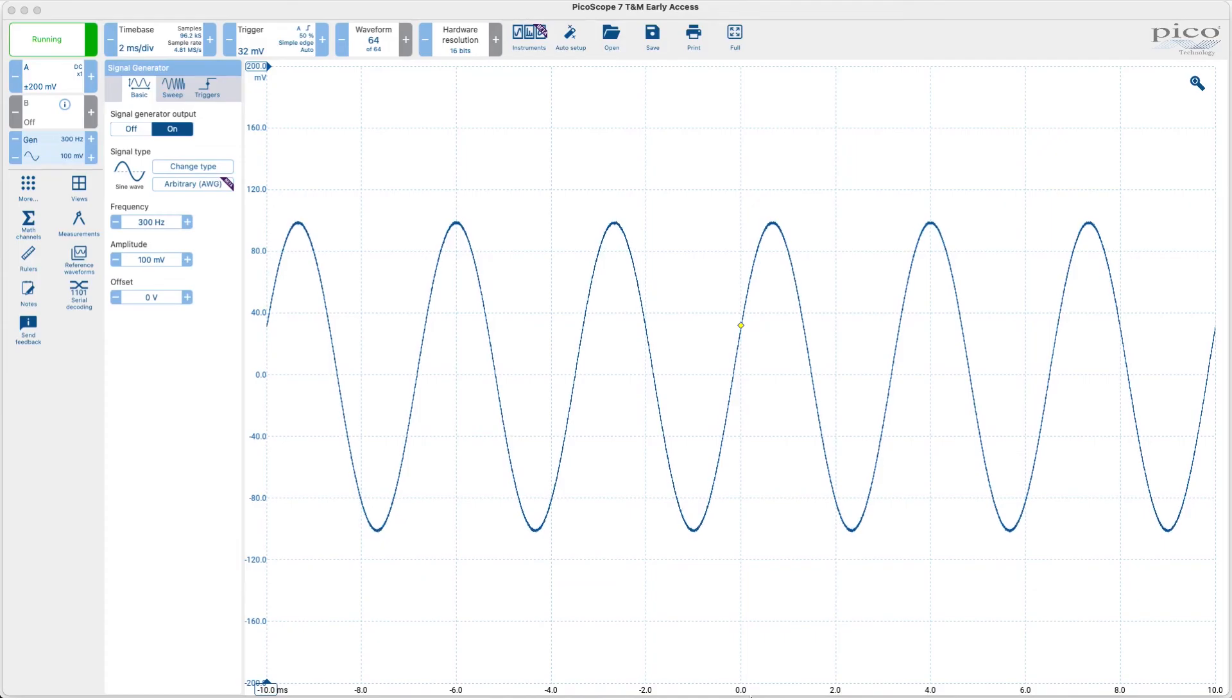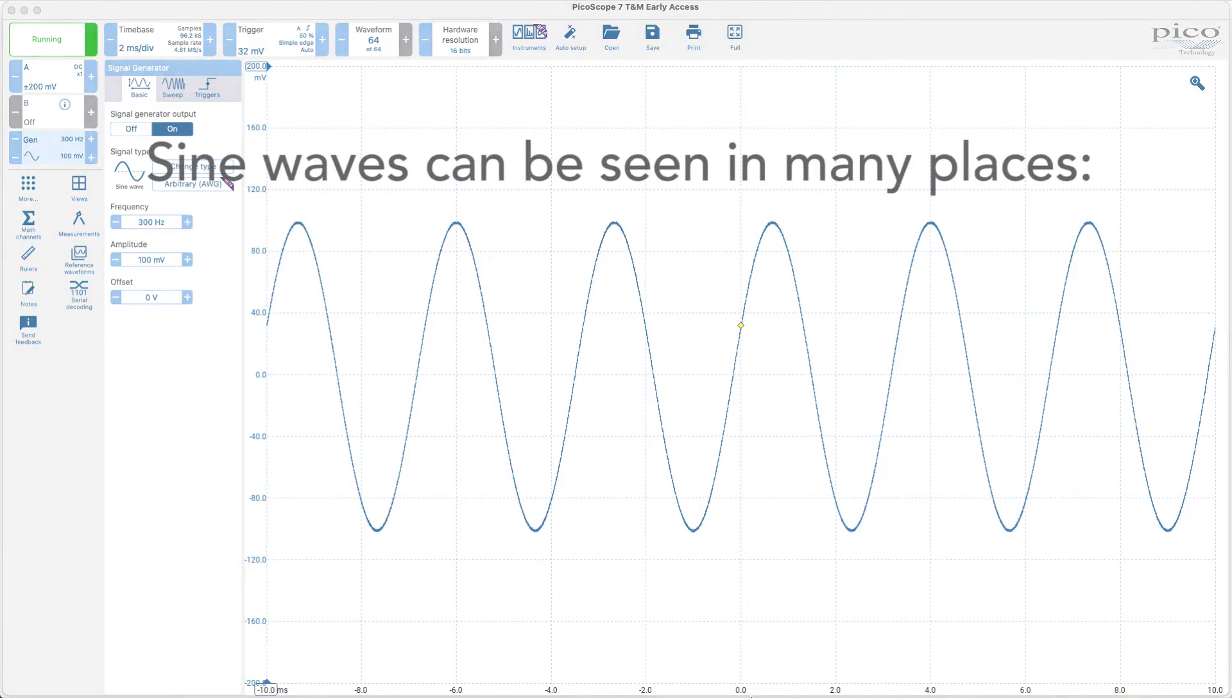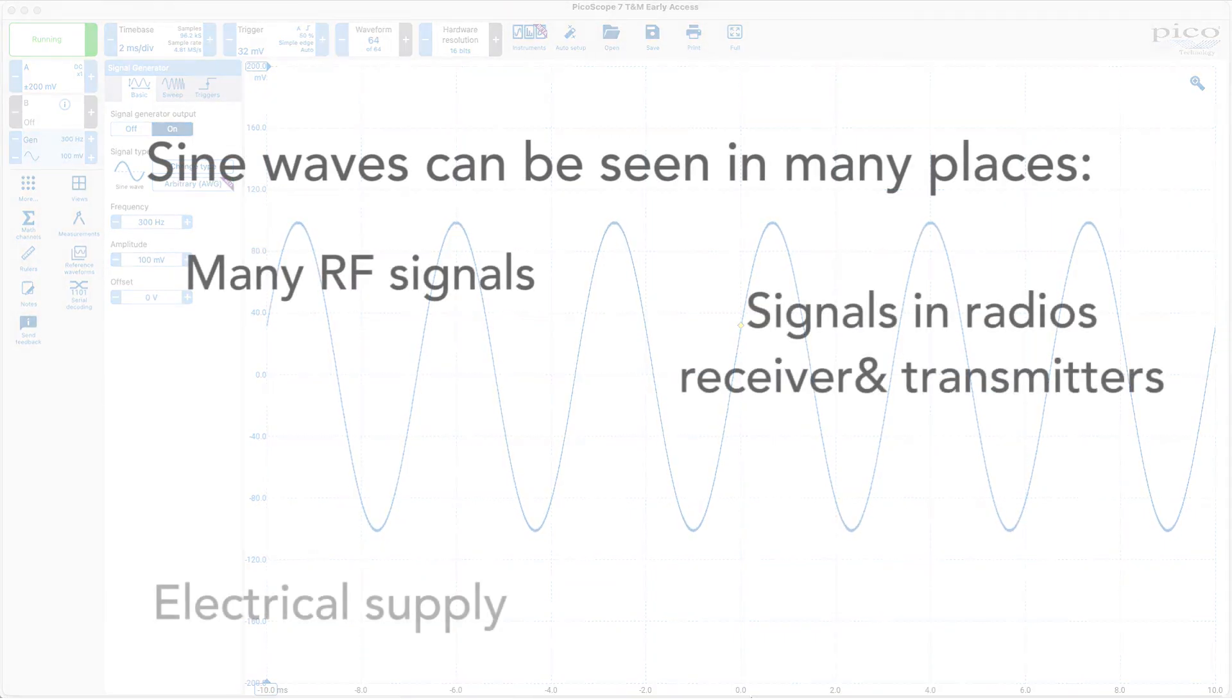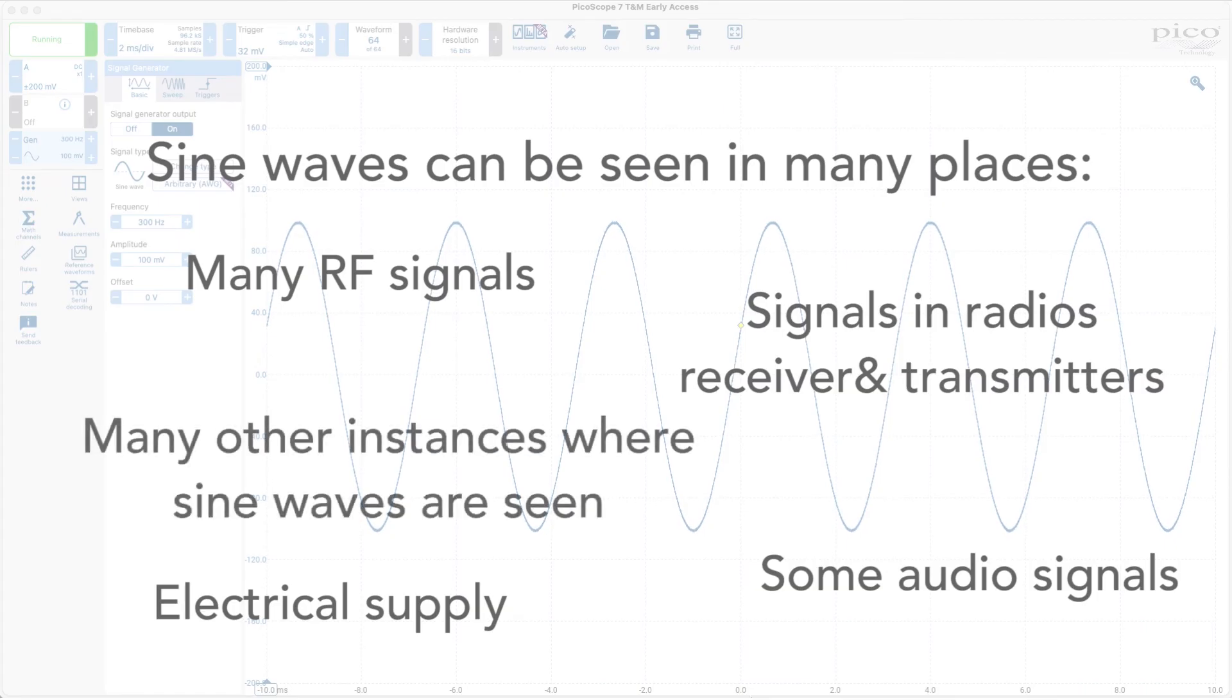There are many places where we see sine waves. Many RF signals are sine waves, and the electrical AC supply or mains as it's sometimes called is also a sine wave, and often it has a lot of noise on it but essentially it is a sine wave. And there are audio generators which often produce sine waves, and there are many other places where these waves are seen.